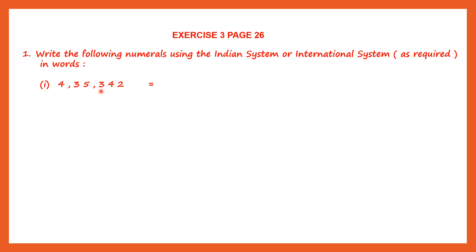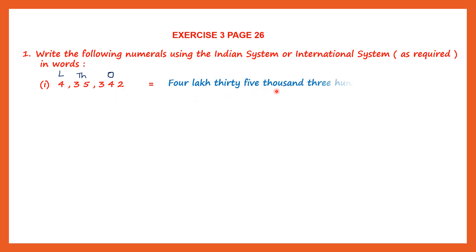Ones, tens, hundreds, thousand, ten thousand, lakh. So ones, tens and hundreds are in the ones period. Thousands and ten thousands are in the thousands period, and the lakh. So we have three periods: the ones period, the thousands period, and the lakh period. Now we can read 4,00,35,342. So let's write that in words: 4,00,35,342.